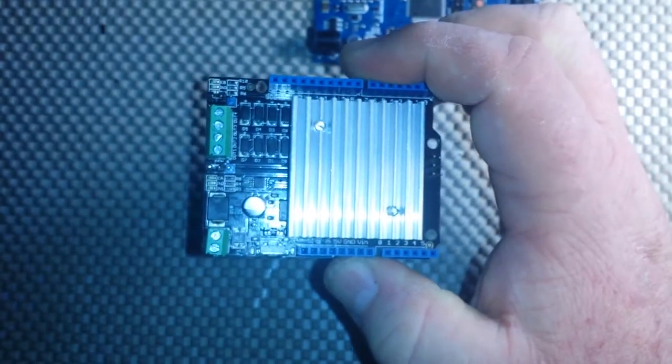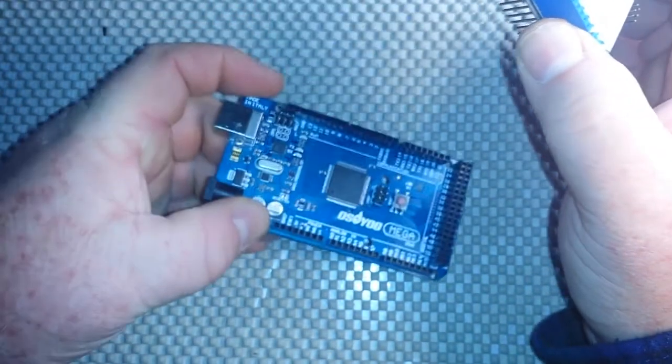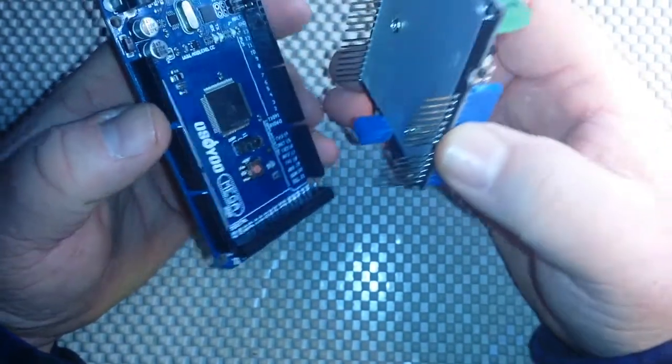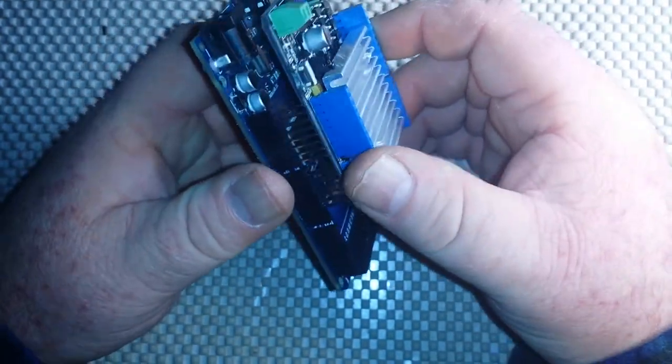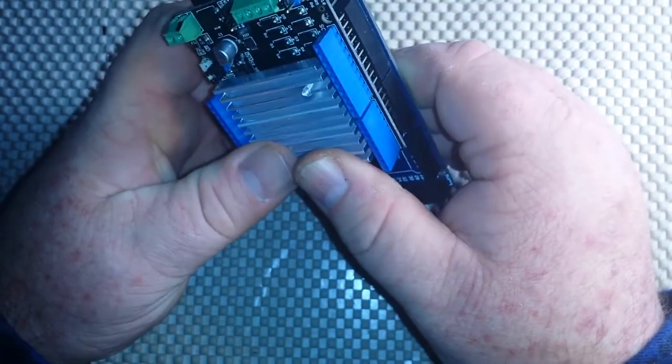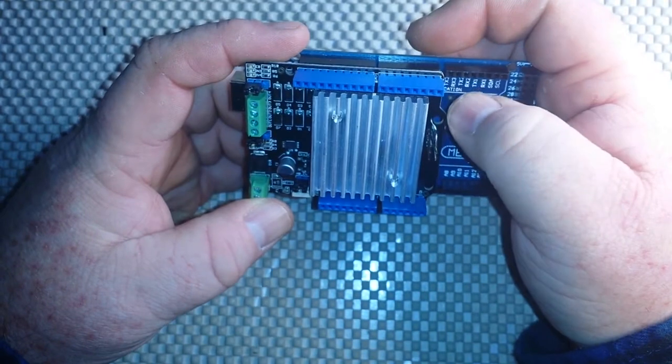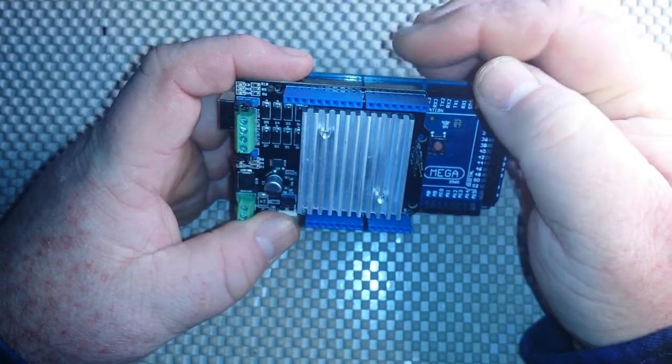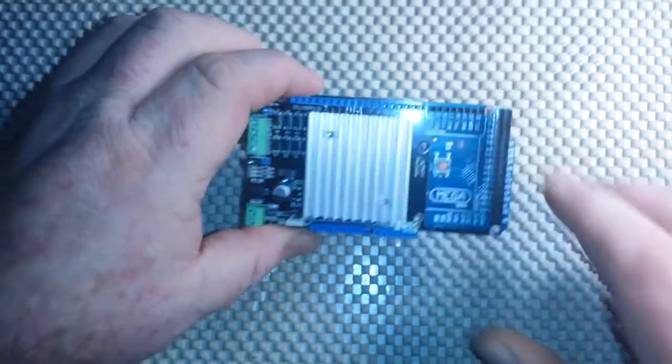Now, this shield uses pins 8 through 13. So, you're not going to be able to use them for anything else, which is one of the reasons that I'm picking the Mega for this. Now, you can see where the ISP header fits on there. We can just plug her in like this. Fits very nicely. And it passes through the pins. All the 8 through 13 are gone. But we still have digital 1 through 7 there. And then we have all of our extra pins that the Mega gives us.